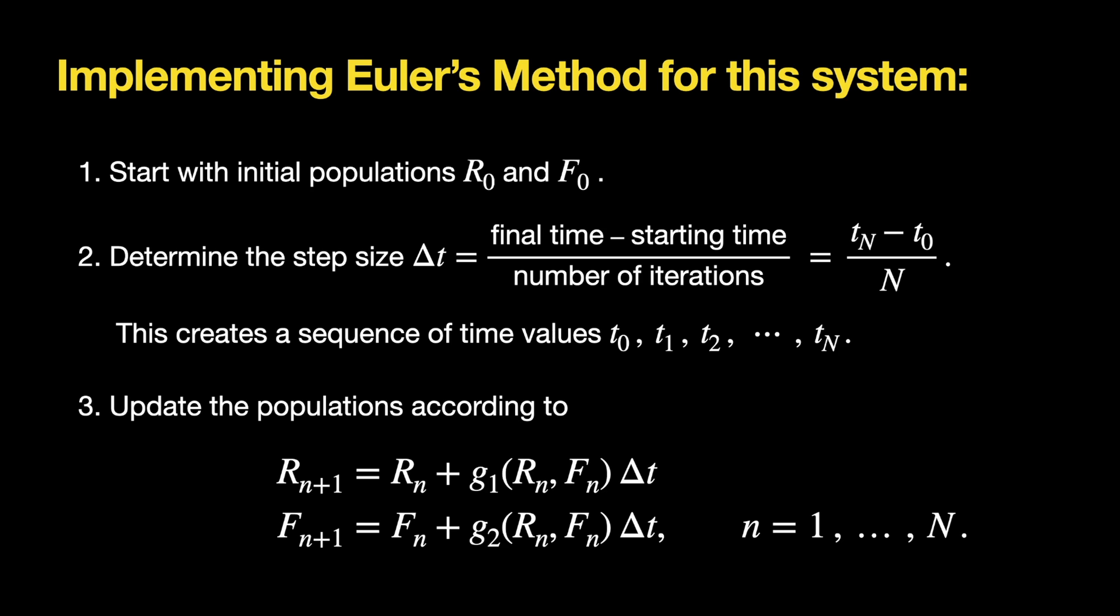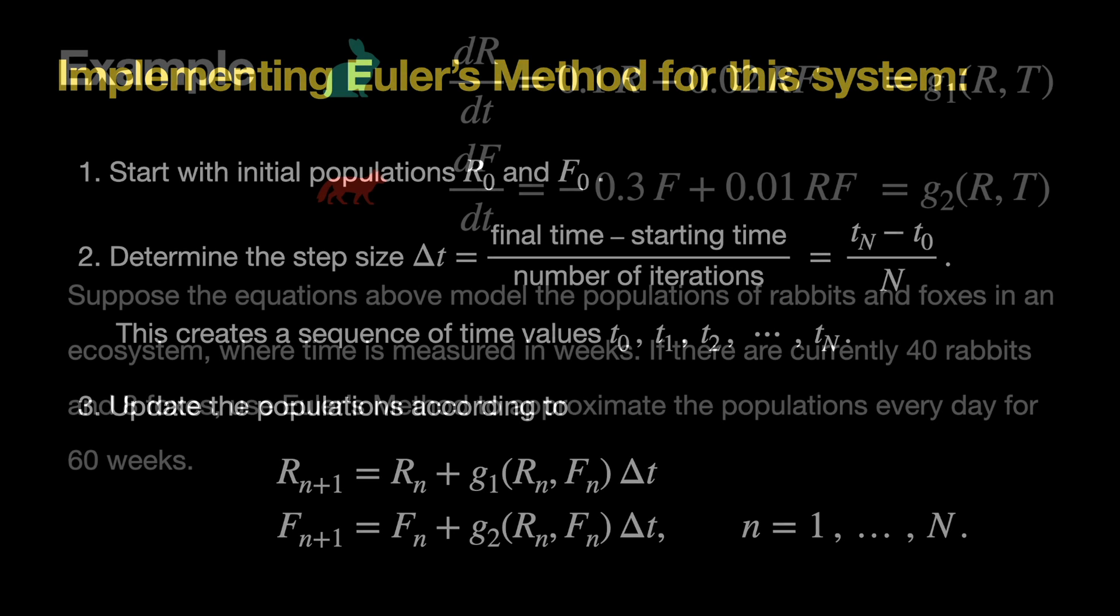Then with the equations on hand, what we would do is simultaneously update the populations for each of those time values. So our approximation for the new rabbit population for every time we take a step in this process is based on the previous rabbit population plus G1 of the previous populations times the time step. And similarly, our approximation for the new fox population is the previous fox population plus G2 of the previous populations times the time step. Notice that you have to plug Rn, Fn into both functions every time you step forwards. So what you can't do is generate all the rabbits, then generate all the foxes. You have to generate rabbits and foxes simultaneously.